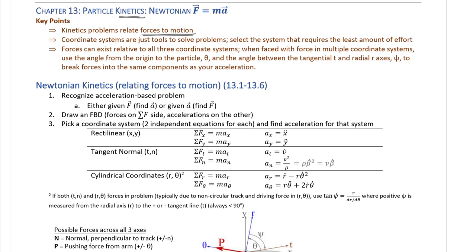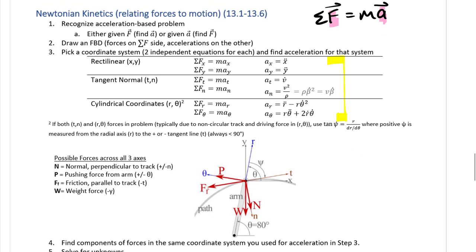Everything in Newtonian is based on sum of forces equals mass times acceleration, so this force vector and acceleration vector must be in the same components. If you have forces in t and n, get your acceleration in t and n. If you have acceleration in r and theta, get your forces in r and theta — match those up. The equations on the right side of the table were derived back in chapter 12 and simply relate position, velocity, and acceleration relative to three different axis systems.